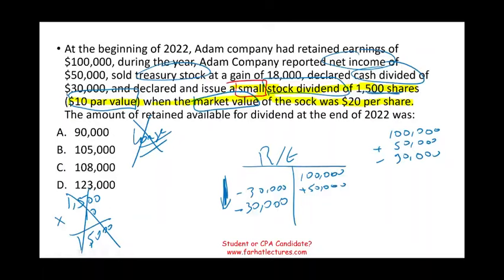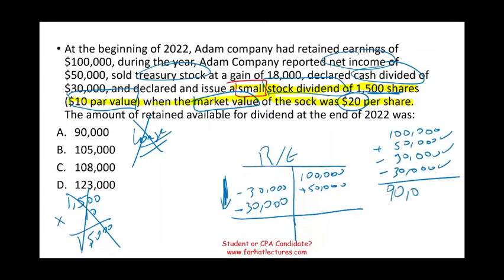For a small stock dividend, you take the number of shares times the market value. Now we can compute ending retained earnings: we started with $100,000, added net income of $50,000 giving $150,000, then reduced by the cash dividend of $30,000, and reduced again by the small stock dividend of $30,000. The ending retained earnings is $90,000.